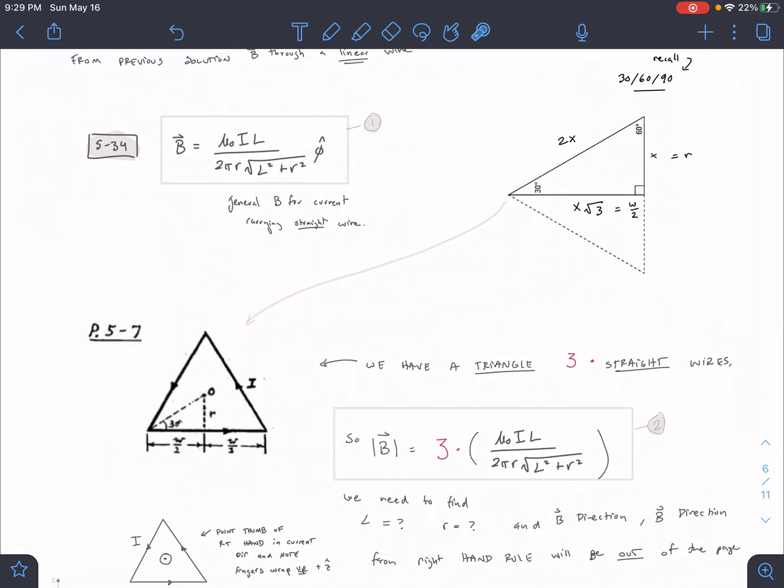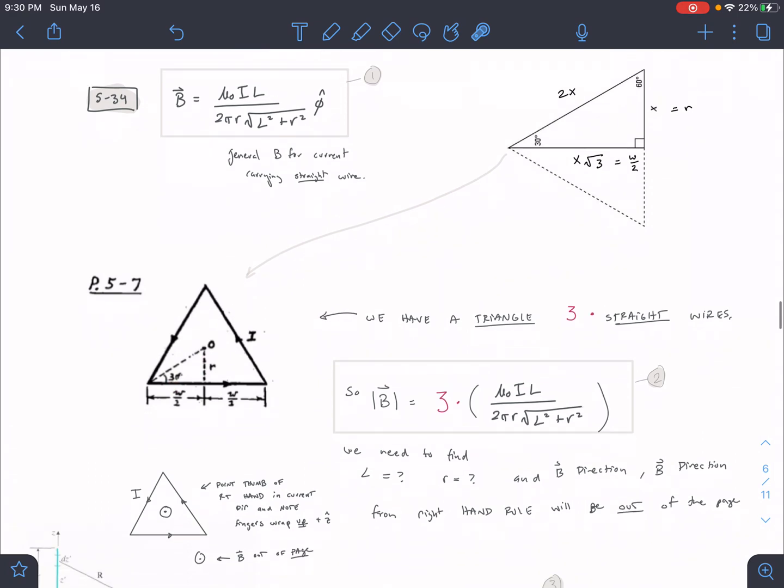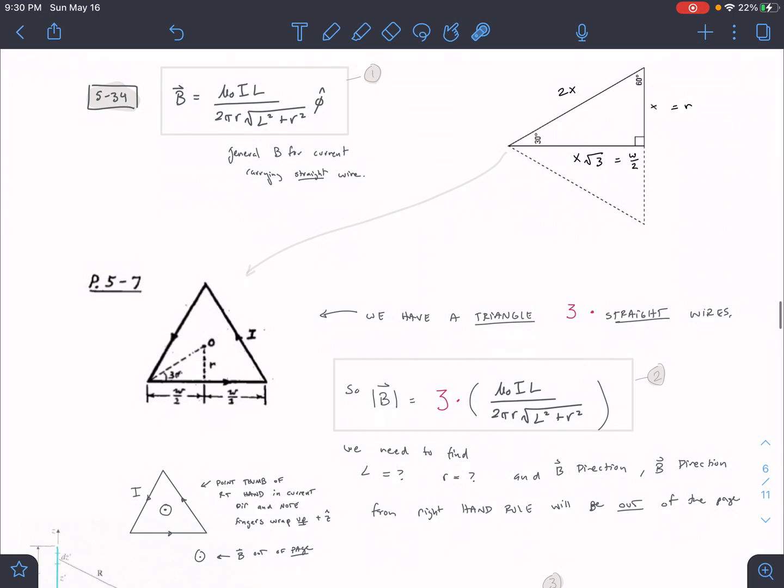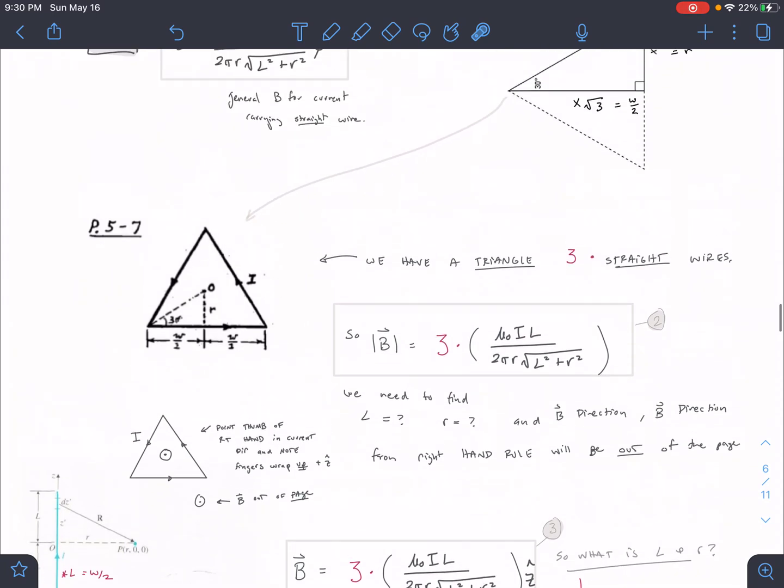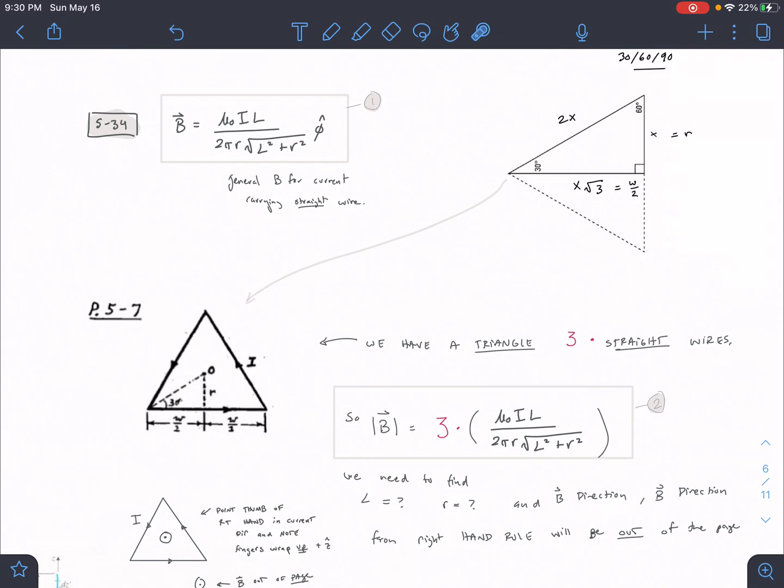So we're using this equation, we're finding our sides, and then we are plugging them in. So we have three sides, so we're multiplying our general equation for a wire by 3. And then we need to find l and r. Because we have a 30-60-90 triangle in this case, we have a certain relationship between the sides.